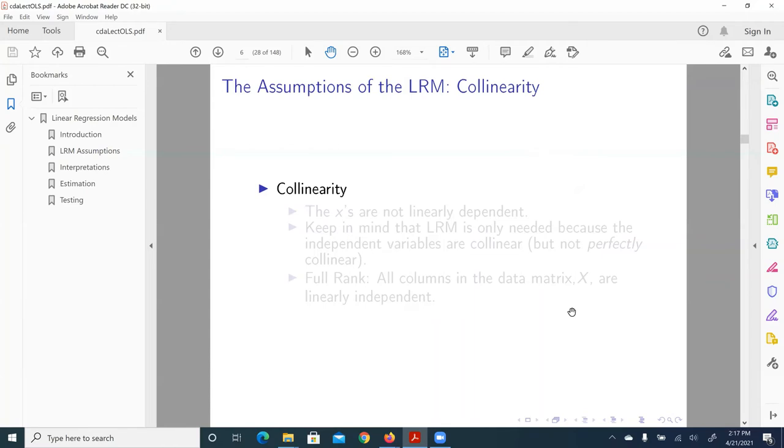Second assumption is collinearity. And that would imply the x's are not linearly dependent. First is the x's are not linearly dependent. That means, from one variable, we cannot perfectly deduce information for another independent variable. So that's called linear dependency. And we don't want to have that.